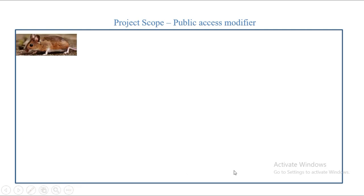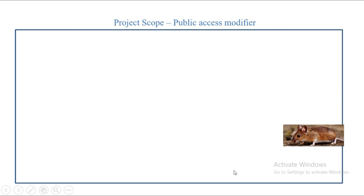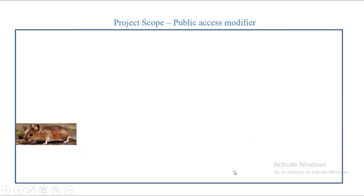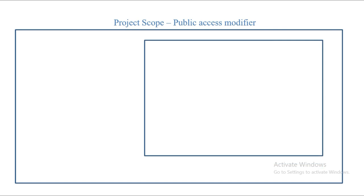Suppose this whole area is my project scope — then public access modifiers can work here. So if I have a mouse variable, that variable is accessible all over the project scope, not just in a particular class or particular subclass.